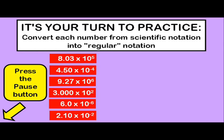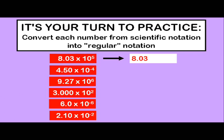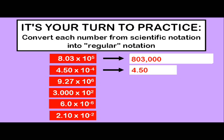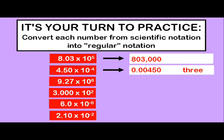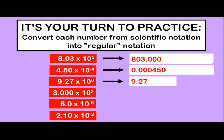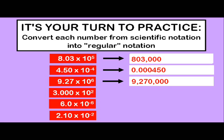Okay, let's see how you did. This first one should be a number that is large, more than ten. We're talking about moving the decimal to the right five places. So, it becomes 803,000 for your answer. The next example should be moving the decimal to the left to make it smaller, less than one. And the final answer is 0.000450. In our third example, we have to move the decimal point six places to the right to make it a larger number. 9,270,000 is correct.